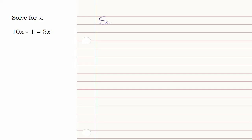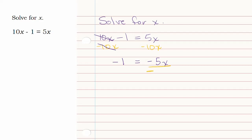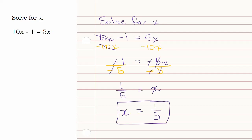I'm going to solve for x. 1x minus 1 is equal to 5x, and we want to get x by itself on one side. Watch your signs. And once you get your solution, you can check your solution.